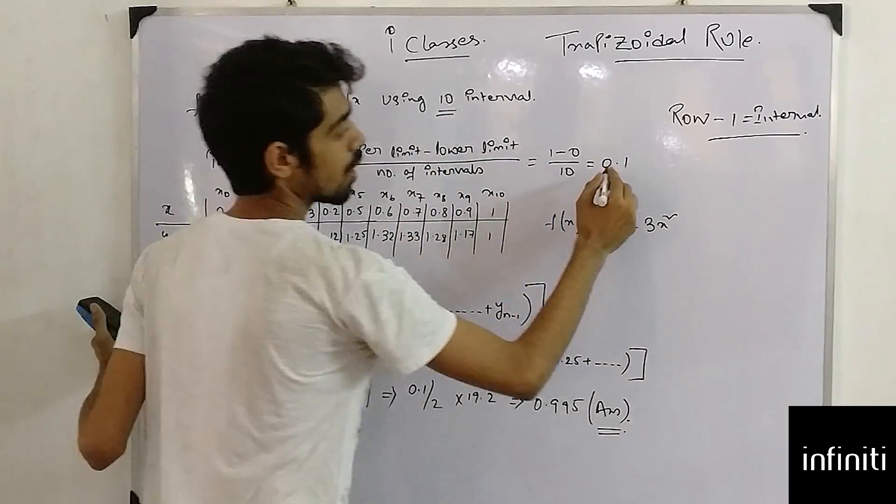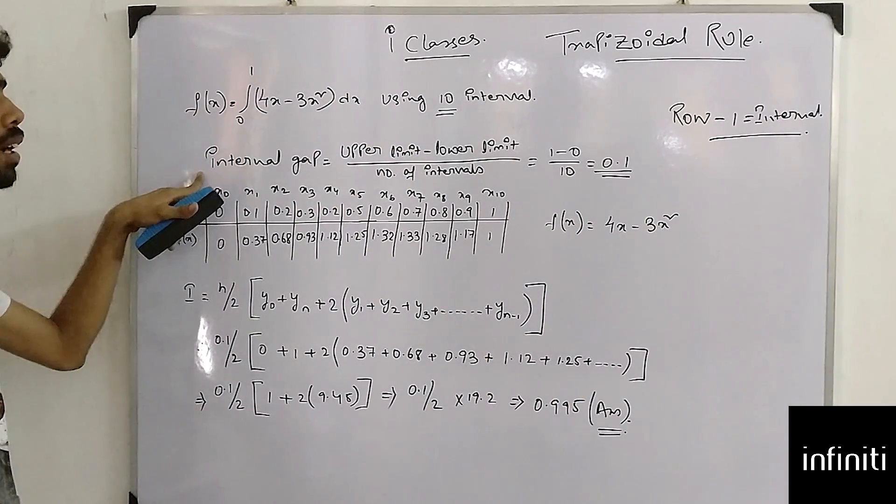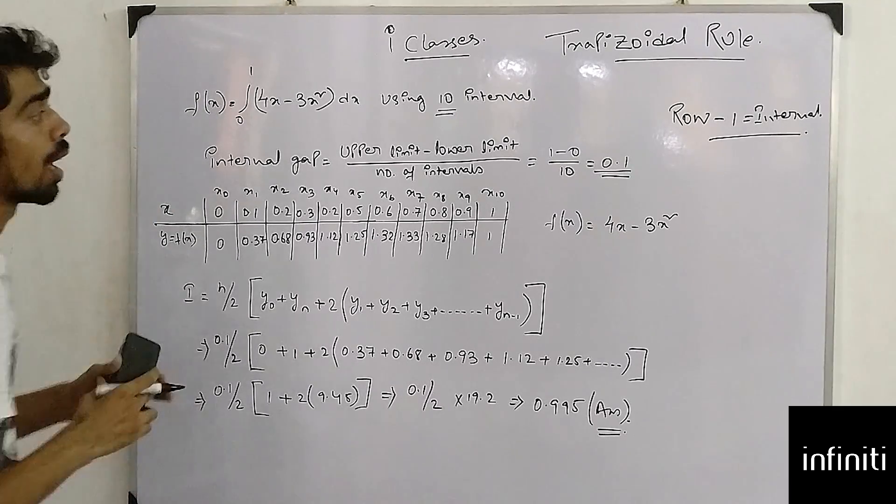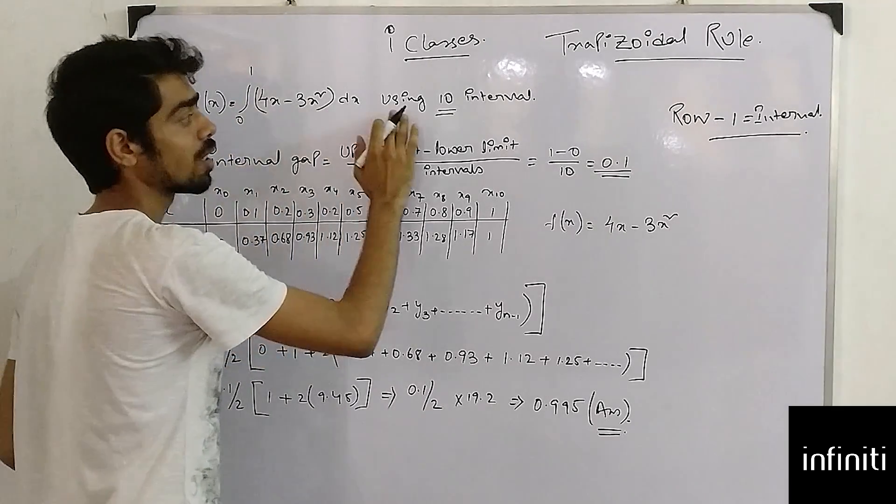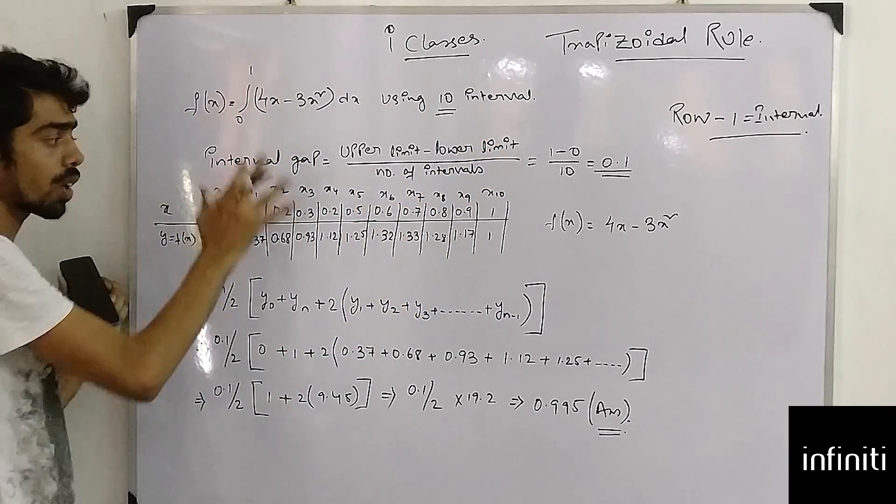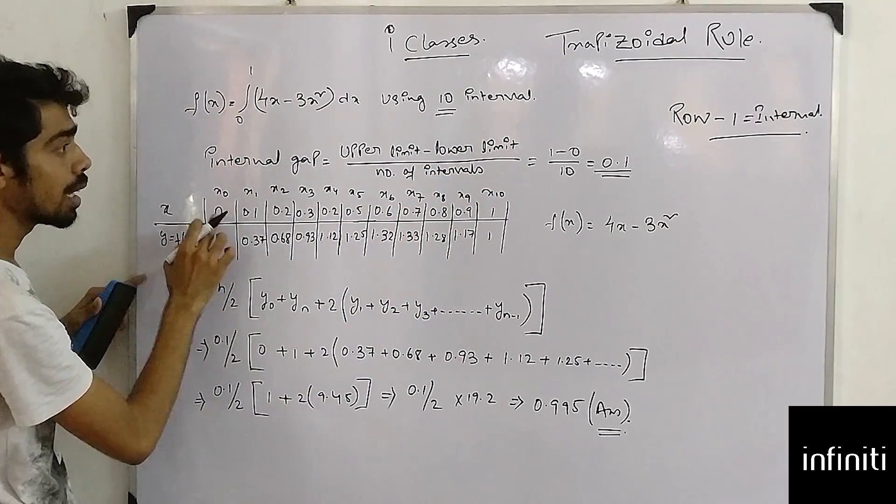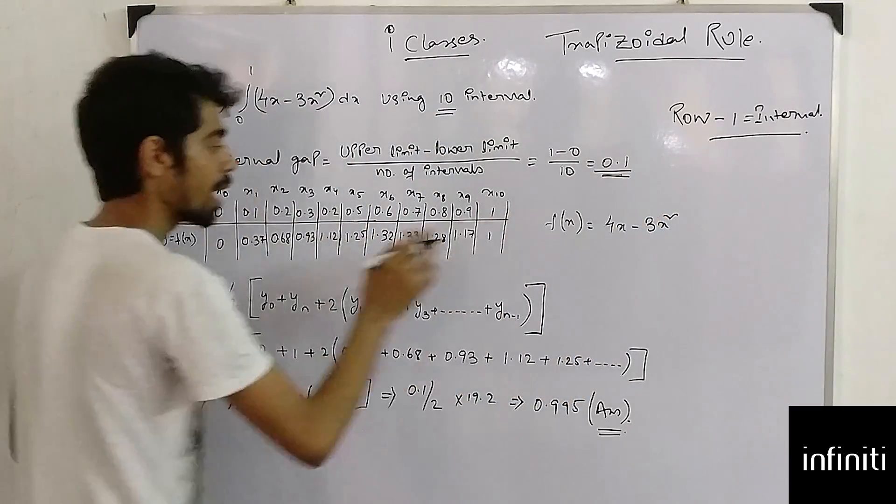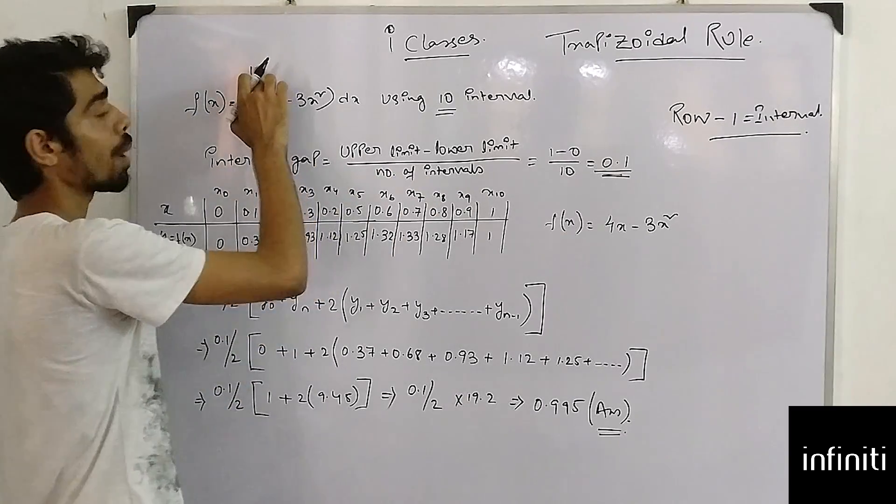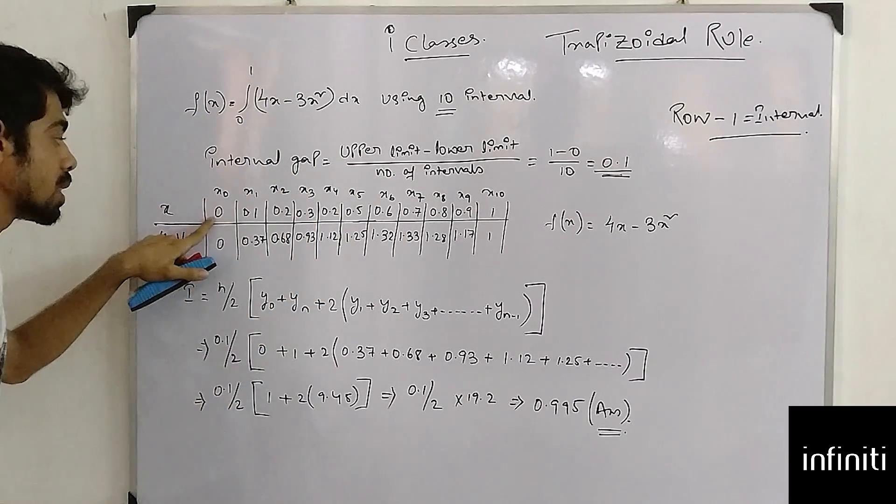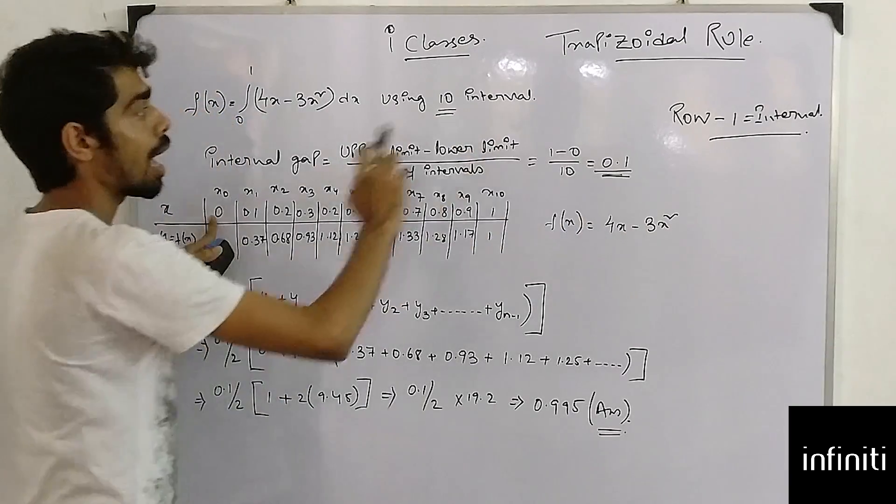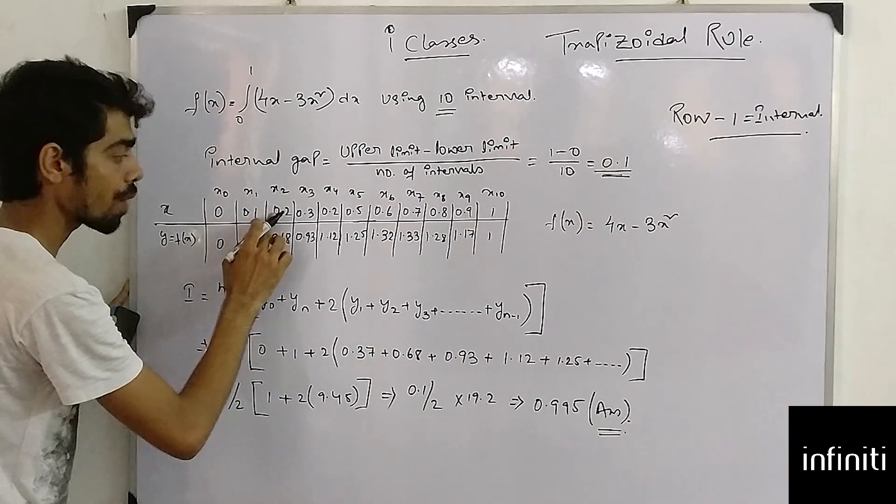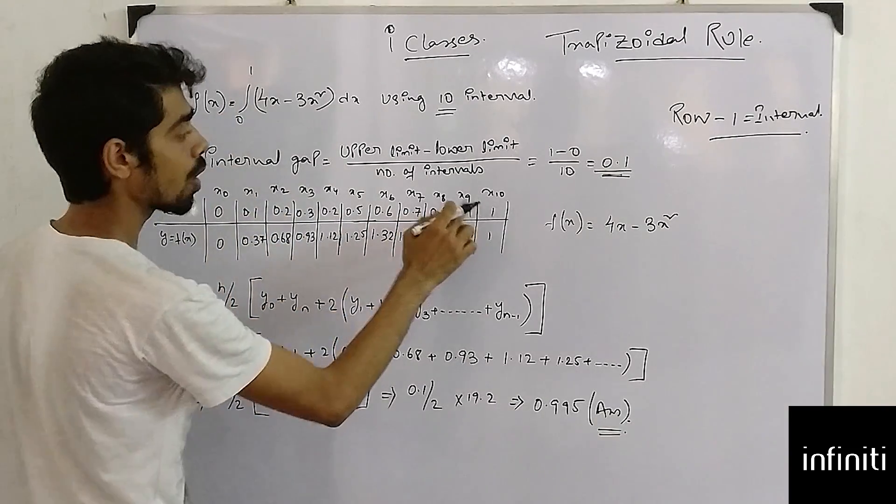So I have my internal gap. Now I have to construct a table using this. What is given in the question? It is given that using 10 intervals I have to find the value of fx. What I will do: starting from 0, giving an increment of 0.1, I will go till I get the upper limit. Starting from 0, incrementing 0.1 again and again till I have reached the upper limit.